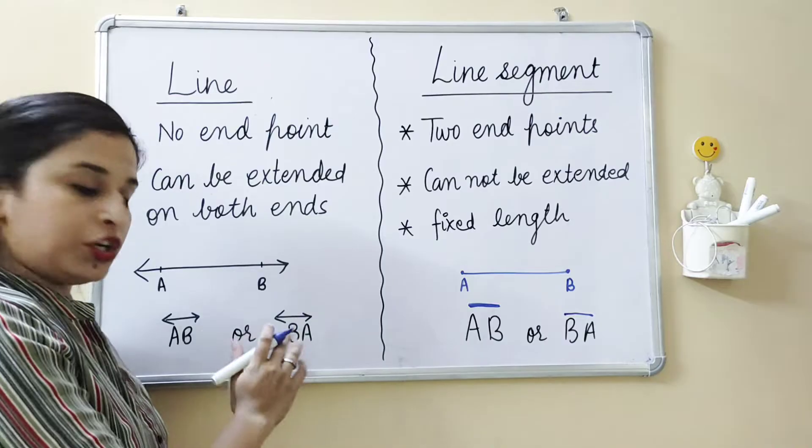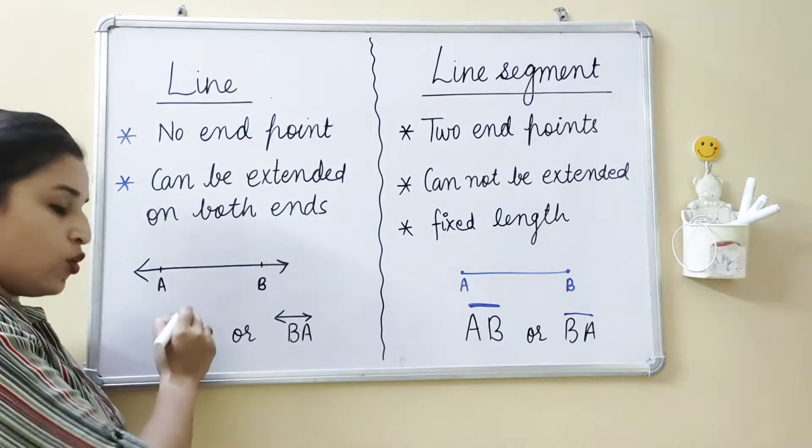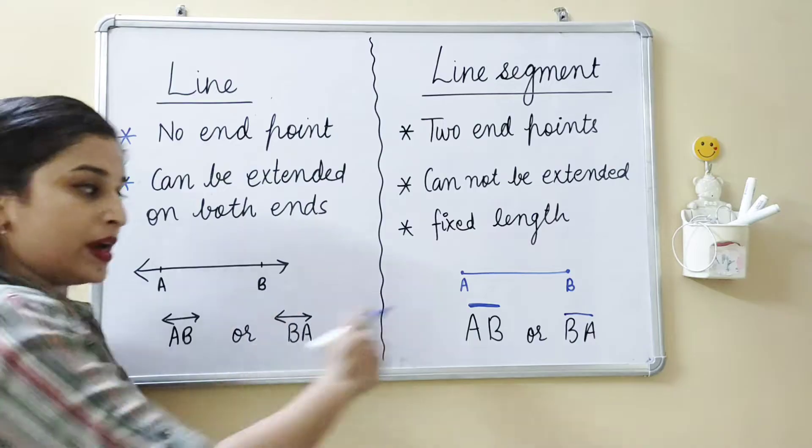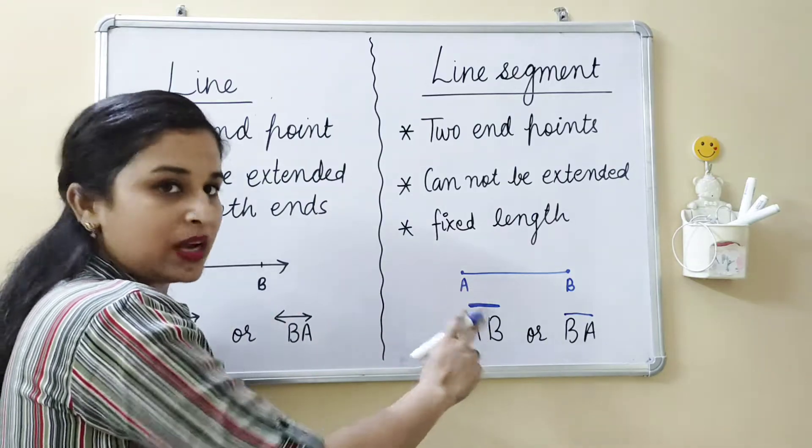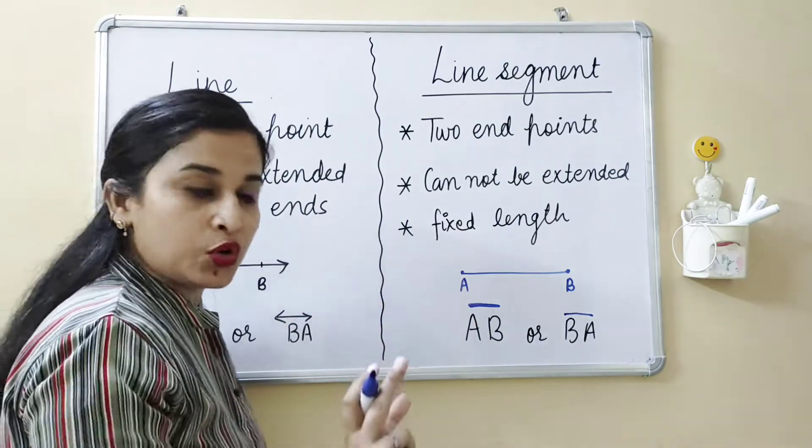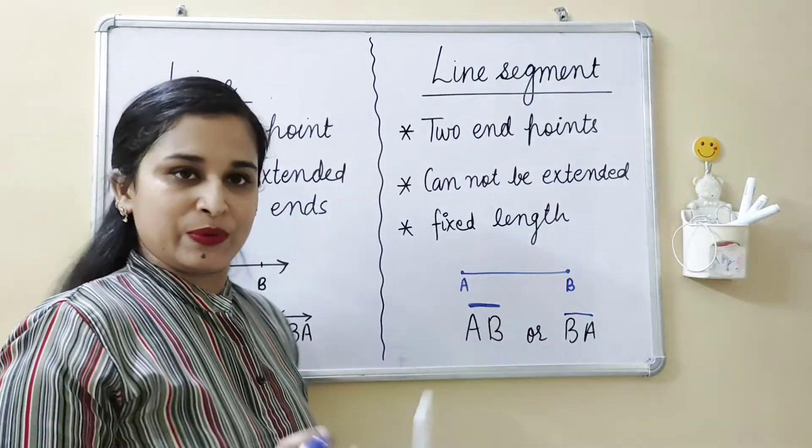In a line, we draw arrows on both sides of the symbol. But in a line segment, we do not draw arrows.